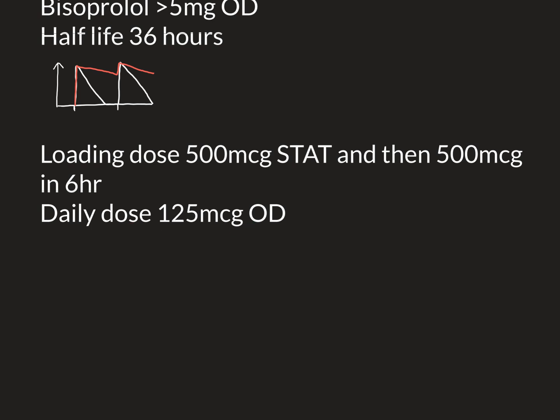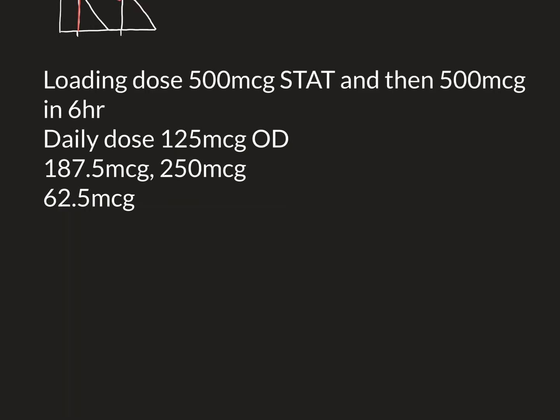Higher daily doses are possible: 187.5 micrograms and 250 micrograms once daily. If you're going to use these higher daily doses, you need to be very careful and ensure the individual has good renal function. Digoxin is removed from the body by the kidneys, so you need to make sure the kidneys are functioning well enough to remove this much drug so that levels don't build up to dangerous concentrations.